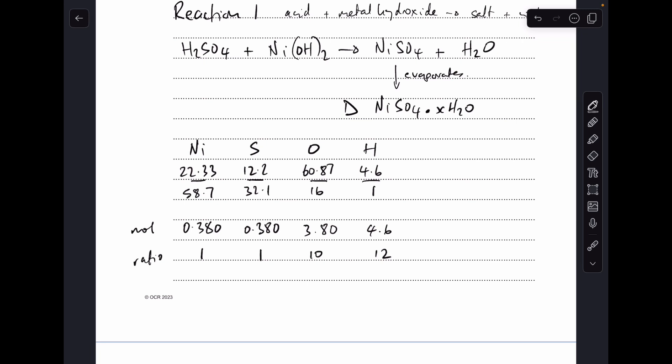So there's the working out there for the ratio. So you can see we've got NiSO4, 10H12. Obviously H12 implies that we've got six moles of water of crystallization. So D must be NiSO4.6H2O.